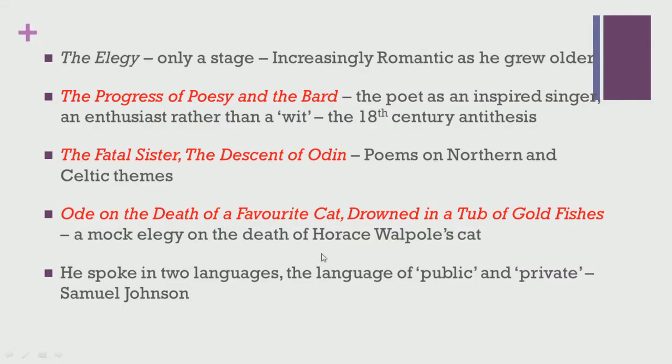In that sense we do not find him confined to what is considered standard in English literature, but moving out of these boundaries. He also composed a mock elegy on the death of Horace Walpole's cat, which was a source of much humour during those days, titled Ode on the Death of a Favourite Cat, Drowned in a Tub of Goldfish. Samuel Johnson once wrote about him that he spoke in two languages — the language of public and private — which made him quite endearing to readers because his poetry was not removed from their reality, closer to their heart in a way that the artificial poetry of the Augustan period could not achieve.